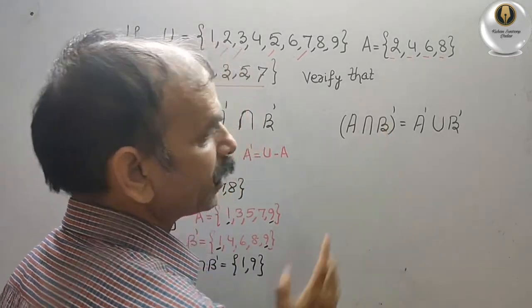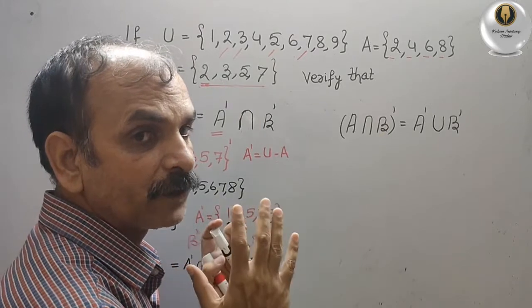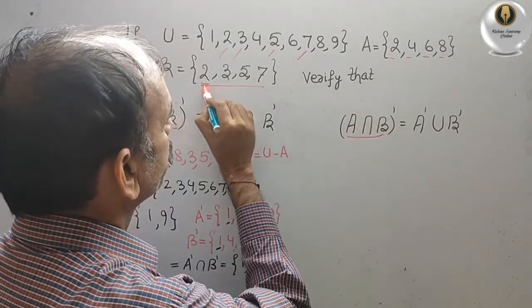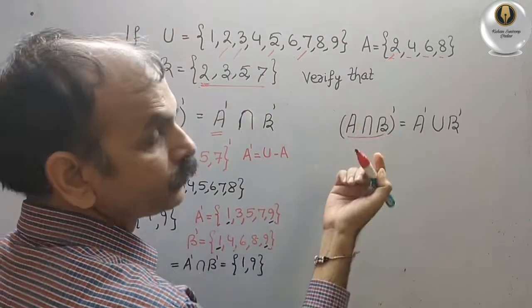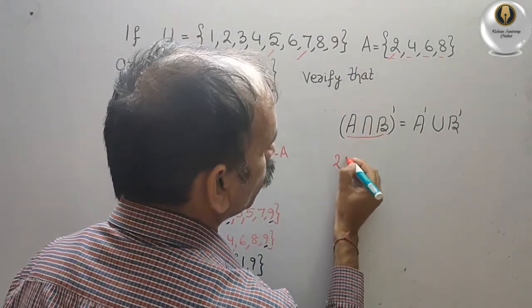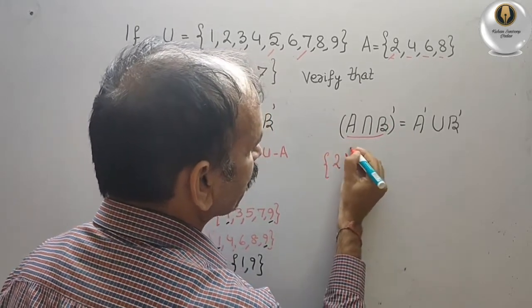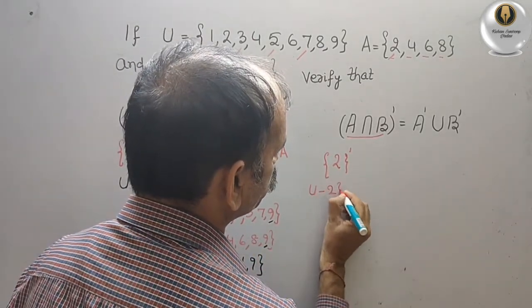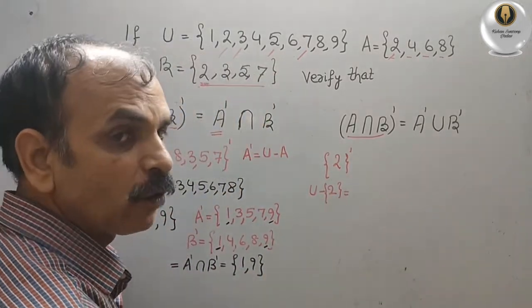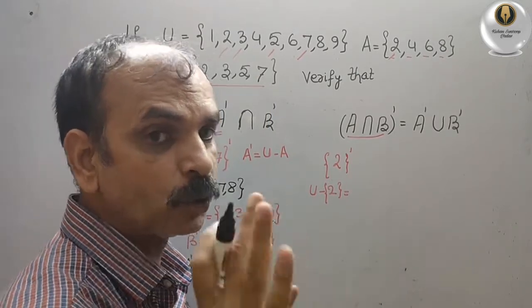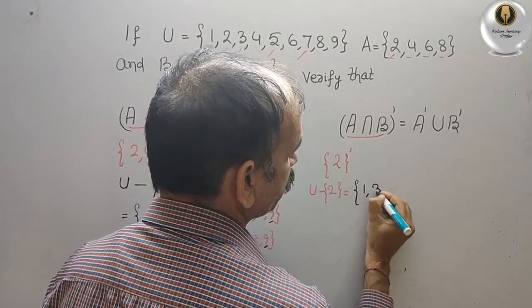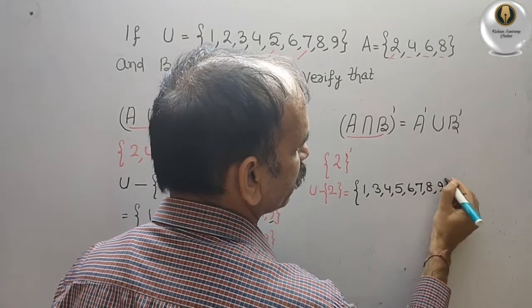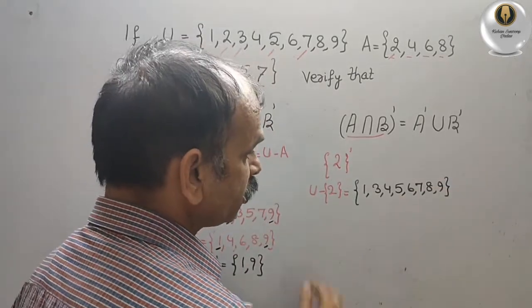Now for the second law: A intersection B — what is common in A and B? We can see only 2 is common. So A intersection B is {2}. Now the complement of that: U minus {2} — that means {1,3,4,5,6,7,8,9}. This is your LHS.